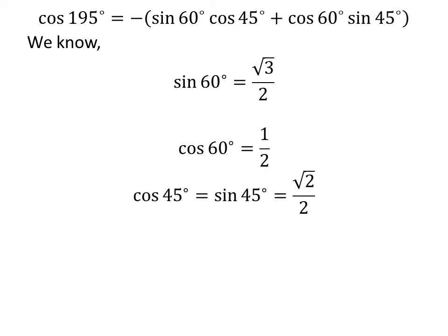As we know, sine of 60 degrees is equal to square root of 3 over 2, cosine of 60 degrees is equal to one half, and cosine of 45 degrees is equal to sine of 45 degrees, which is equal to square root of 2 over 2. So we plug in these values in the above equation.